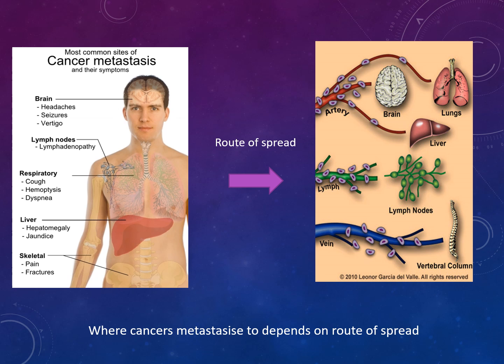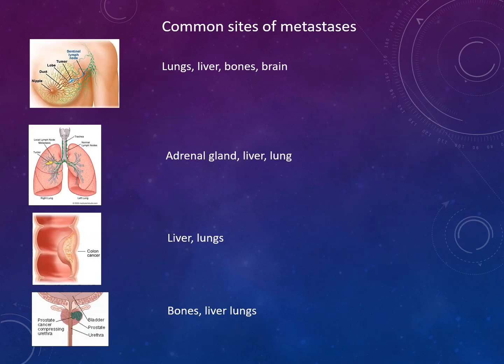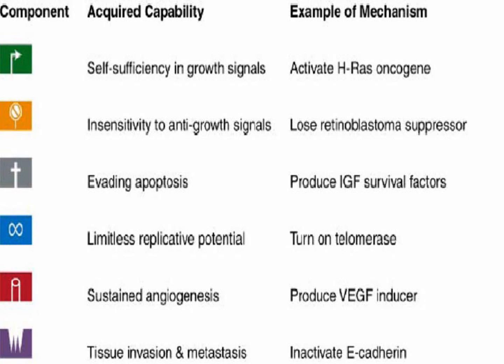The route of spread includes: from the primary site to the brain into the lungs and liver, via lymph to the lymph nodes, via veins to the vertebral system, and to secondary sites including lungs, liver, bones, brain, and adrenal glands.